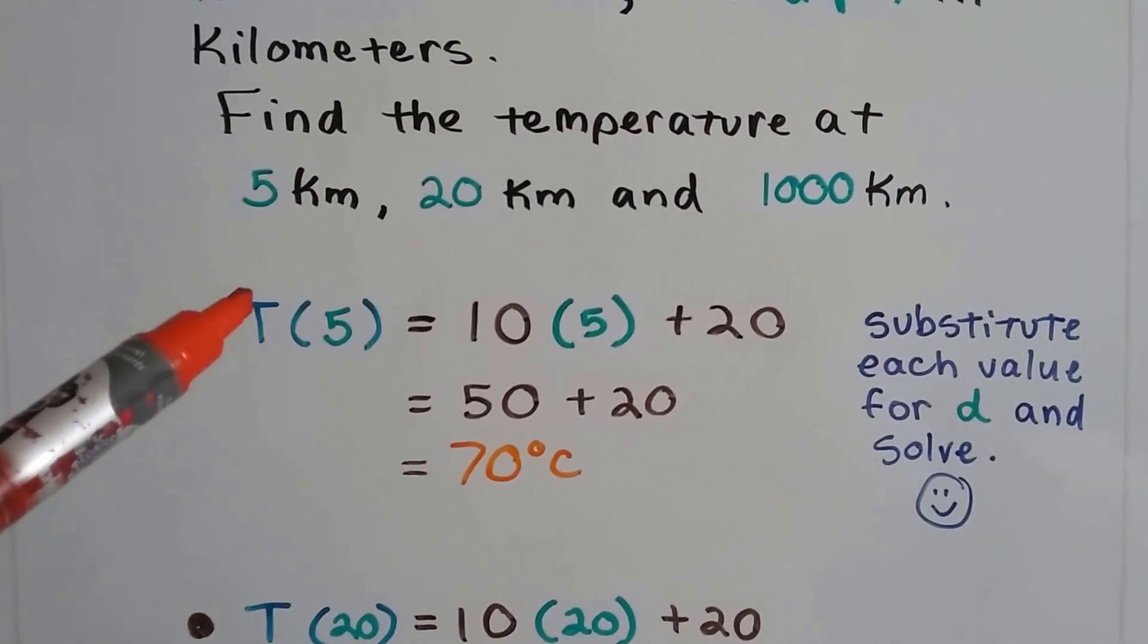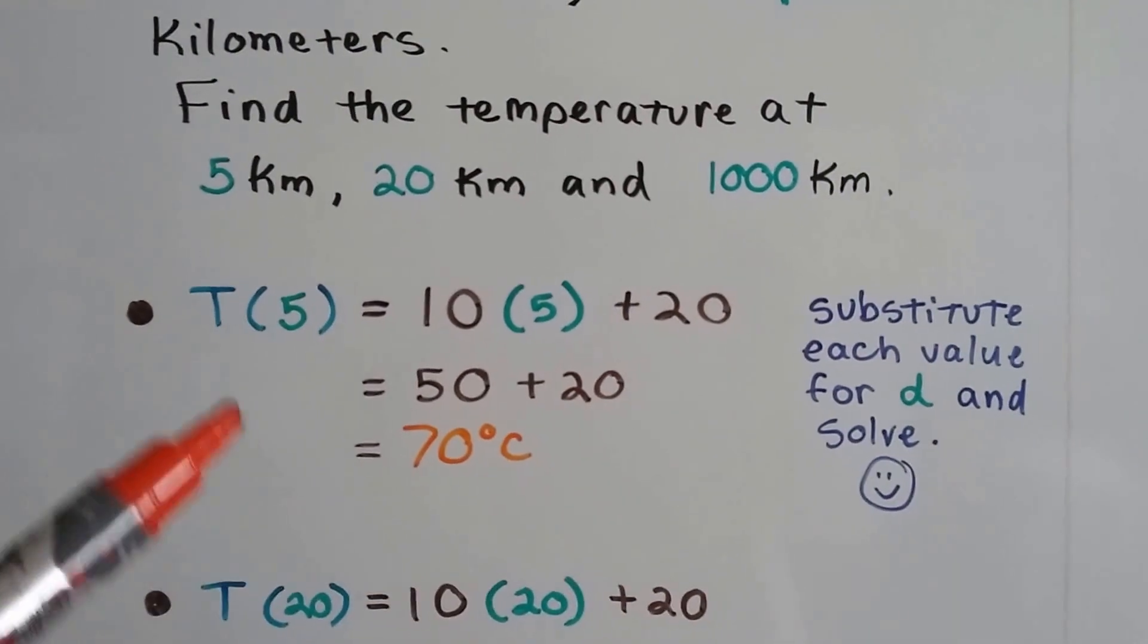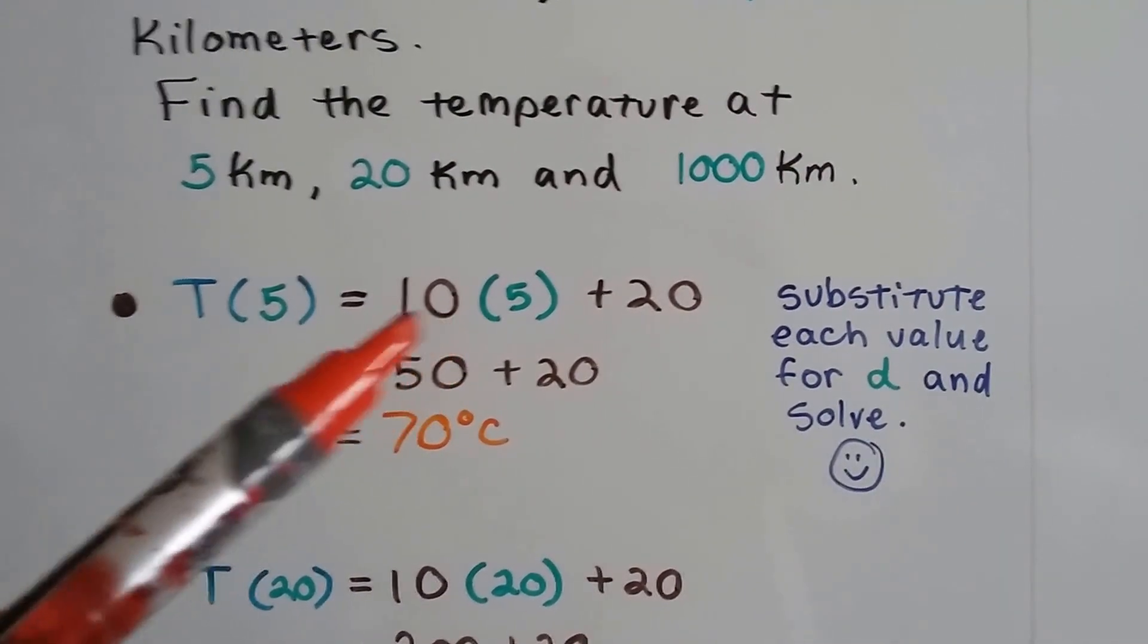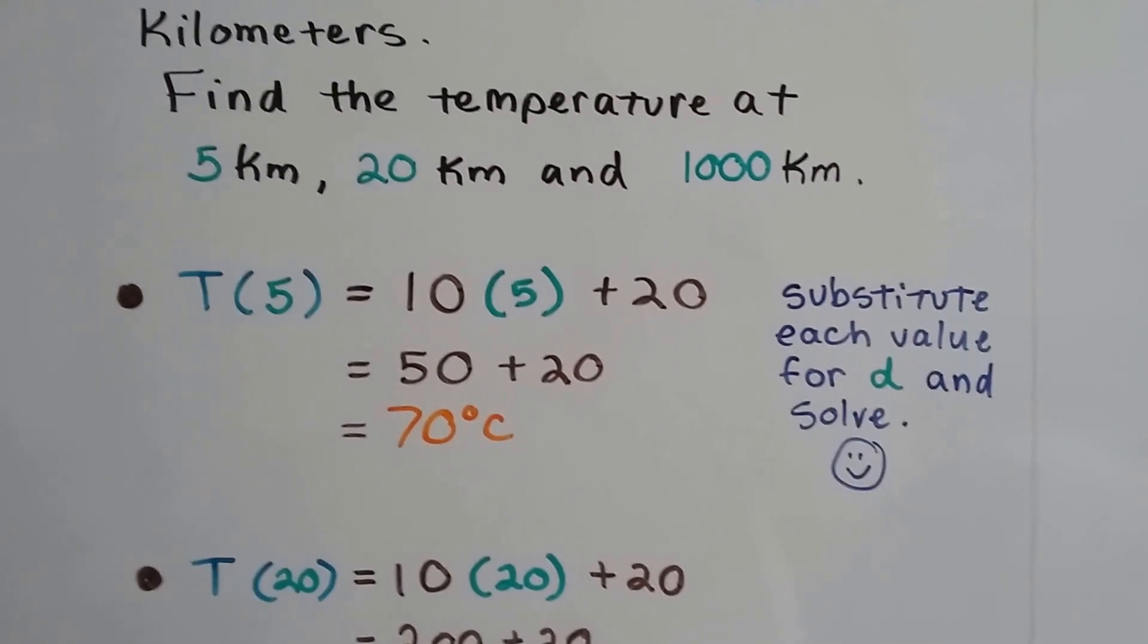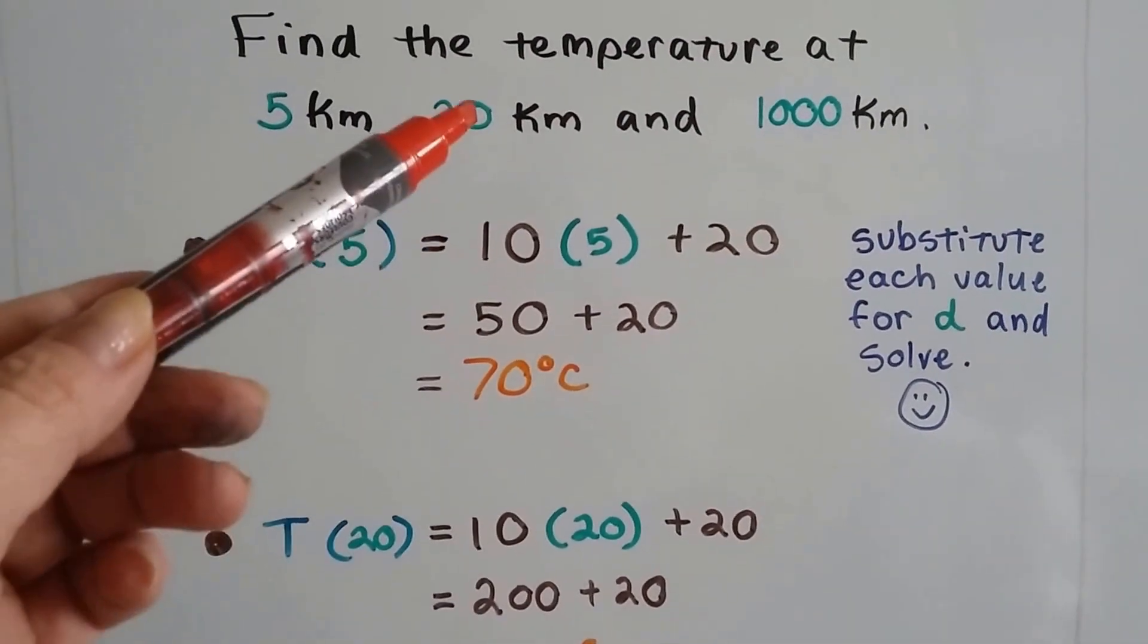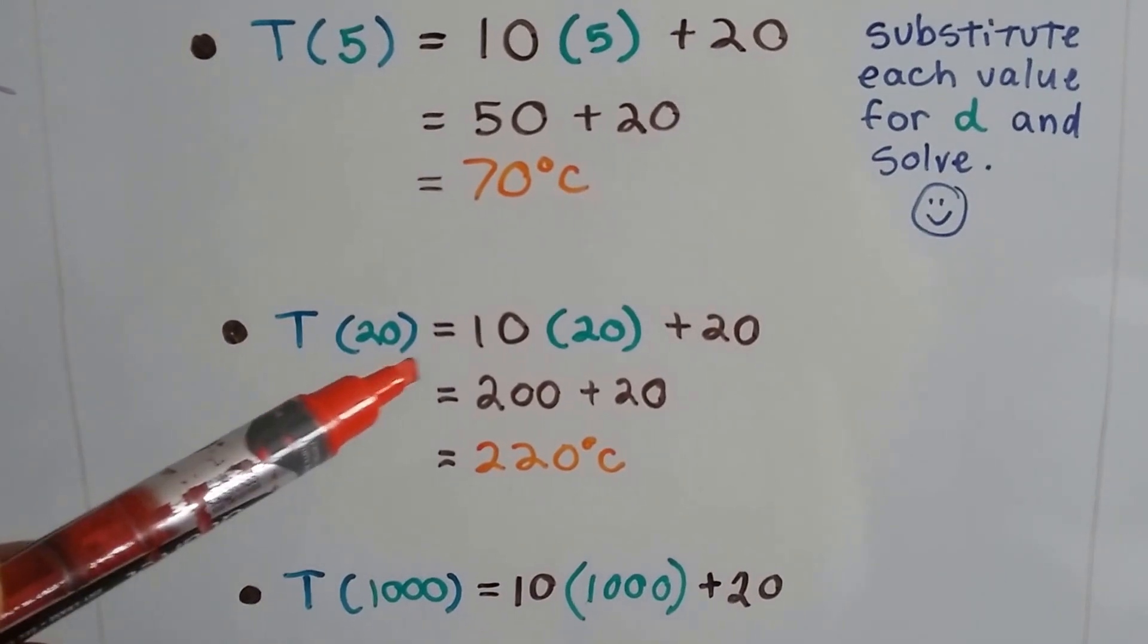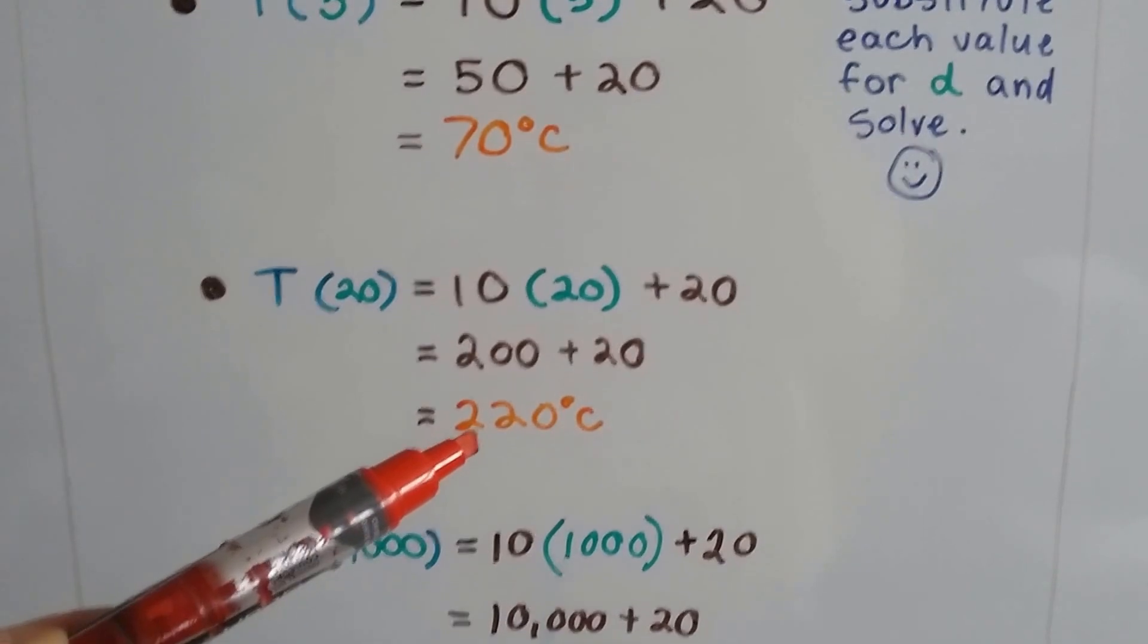T(5) = 10(5) + 20. We plug in this 5 and get 10 times 5 is 50 plus 20, that's 70 degrees Celsius. Just substitute each value for d and solve. It's not as hard as you think. Just substitute 20 into this. We get 10 times 20, which is 200 plus 20, that's 220 degrees Celsius.